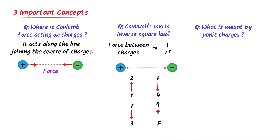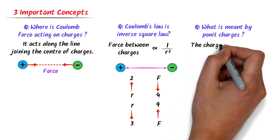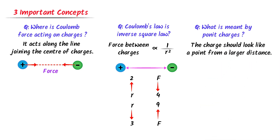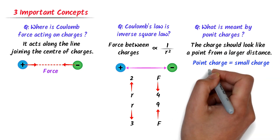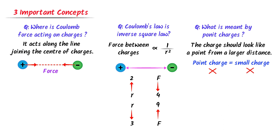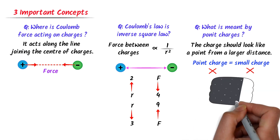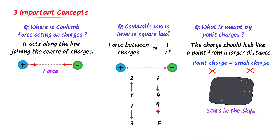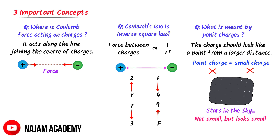Thirdly, what is meant by point charges in Coulomb's law? The simple answer is: the charge should look like a point in space from a larger distance. Point charge doesn't mean small charge — it must simply be present at a larger distance. For example, consider stars in the sky. They are extremely large, but due to the larger distance, they appear as points. So point charge means when charges appear as points from a larger distance.